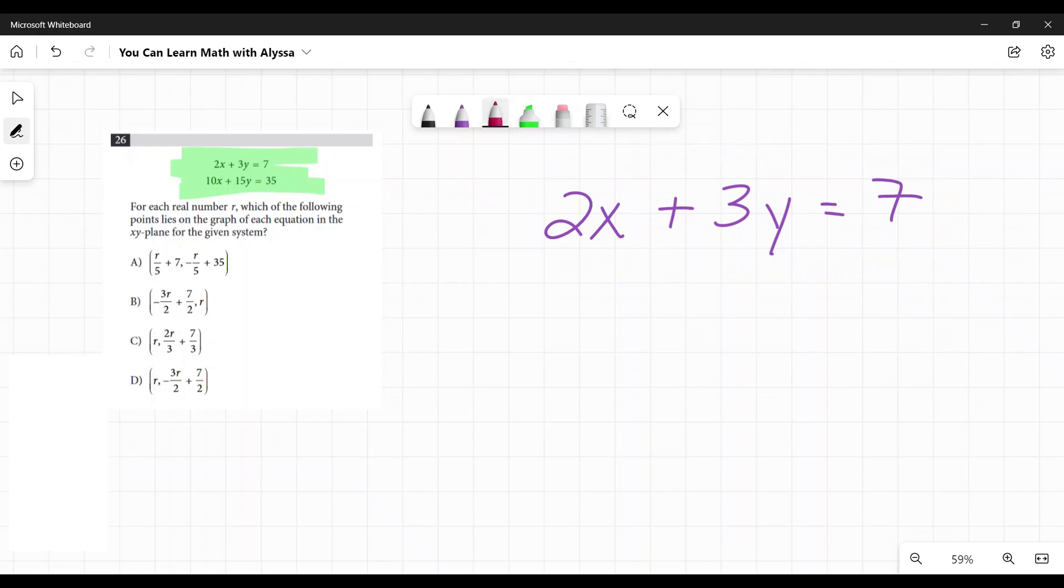So what happens if I solve for x? I'm going to do that over here. 2x plus 3y equals 7. To solve for x, I need to get it by itself. So I'm going to subtract 3y from both sides, and I get 2x equals negative 3y plus 7. Then I need to get rid of that 2, so I'm going to divide everything by 2. And I get x equals negative 3 halves y plus 7 halves.